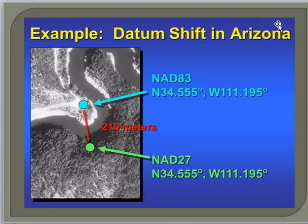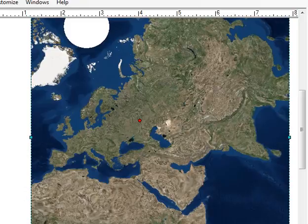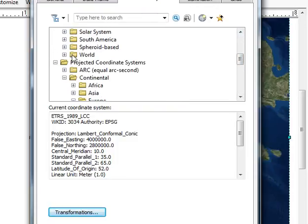Here's an example of a datum shift in Arizona where the same latitude and longitude from the older datum NAD 1927 versus the newer datum 1983 gives two different spots on the ground. It's really important when working with maps and data to know what projection you're working in and whether the data is projected or not projected.